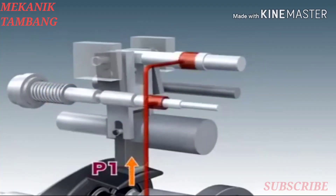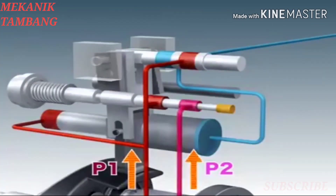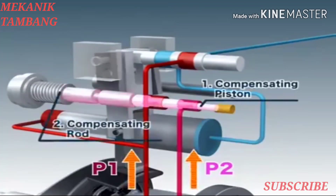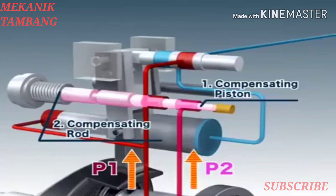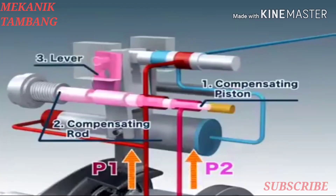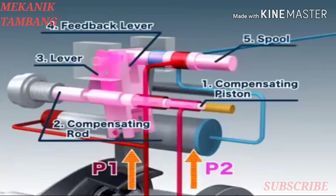When the delivery pressure of the pump, P1, or of a companion pump, P2, increases, the pressure moves the compensating piston, pushing it against the compensating rod. As the compensating rod is pushed, the lever rotates, moving the feedback lever, which in turn moves the spool.